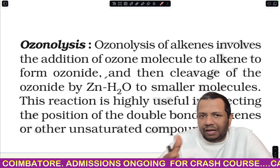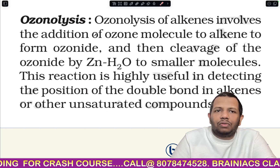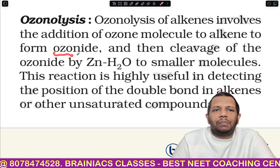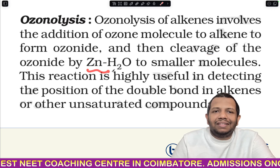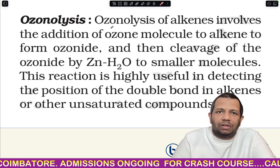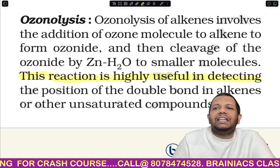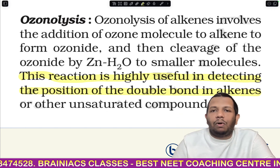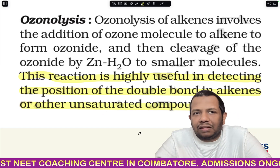First, let's think about what ozonolysis is as stated in NCERT. Ozonolysis of an alkene involves an addition reaction — it is the addition of ozone molecules to the alkene to form an intermediate product called the ozonide. Then, cleavage of the ozonoid occurs using zinc and water to give smaller molecules. This reaction is very important — mark this area — it is highly useful in detecting the position of the double bond in an alkene.